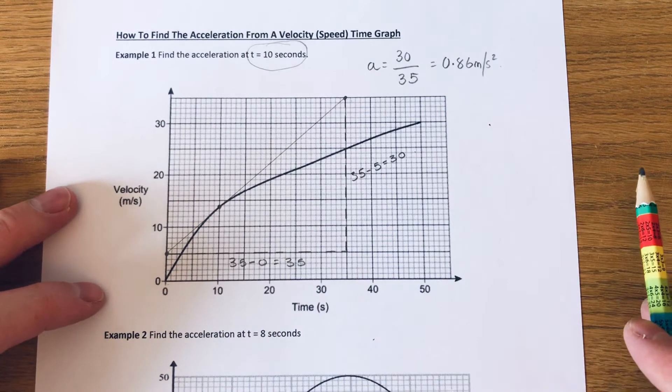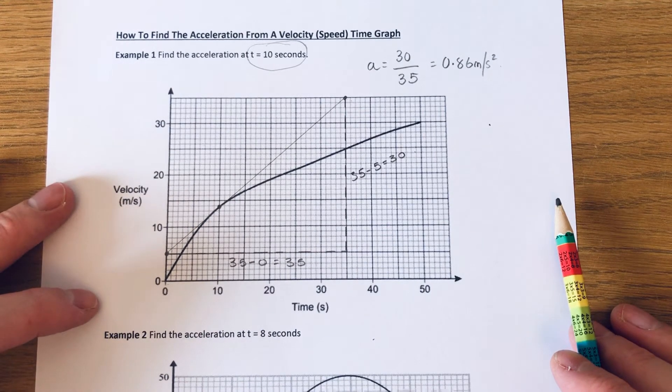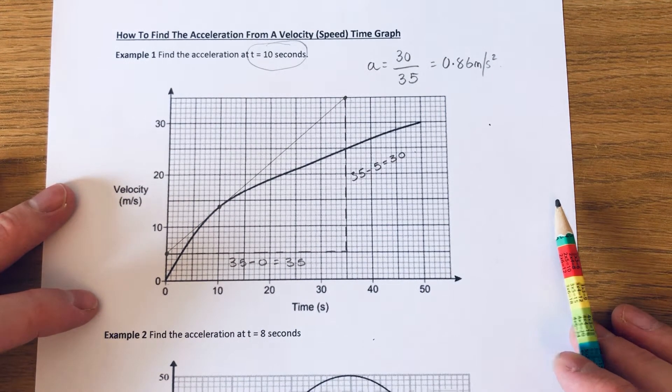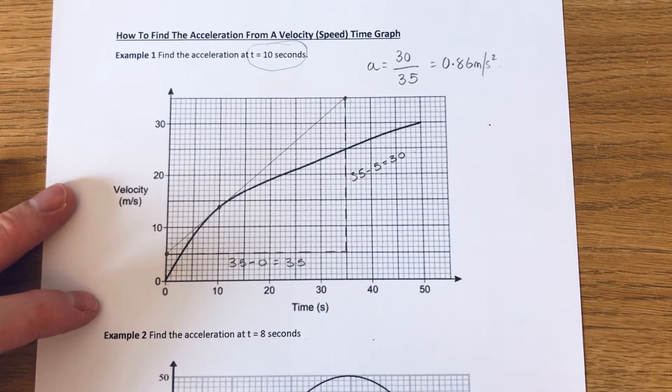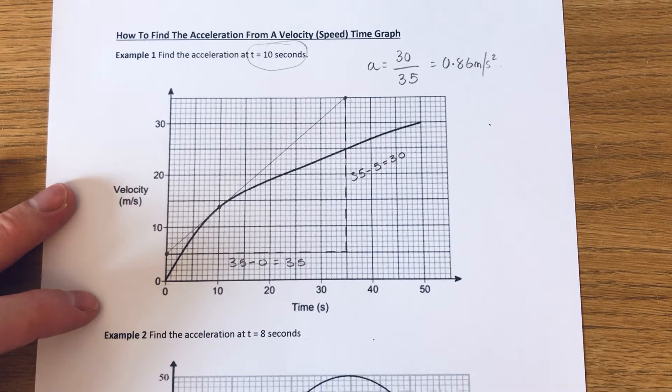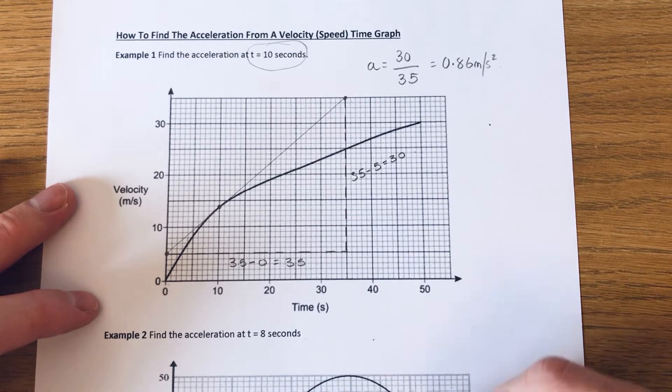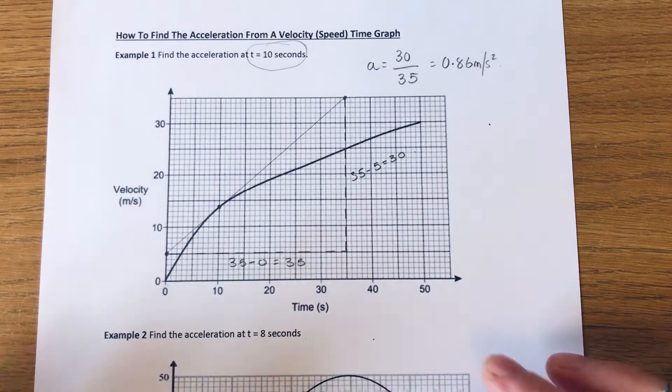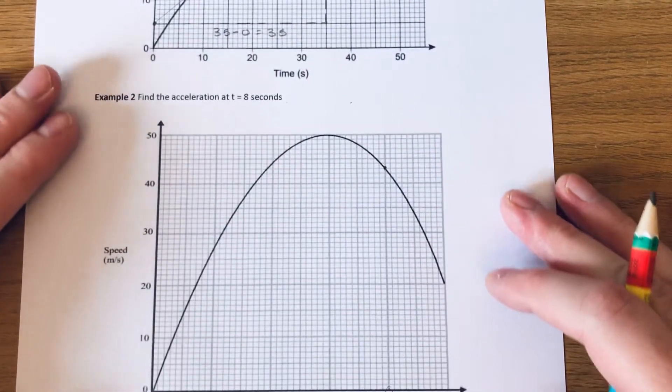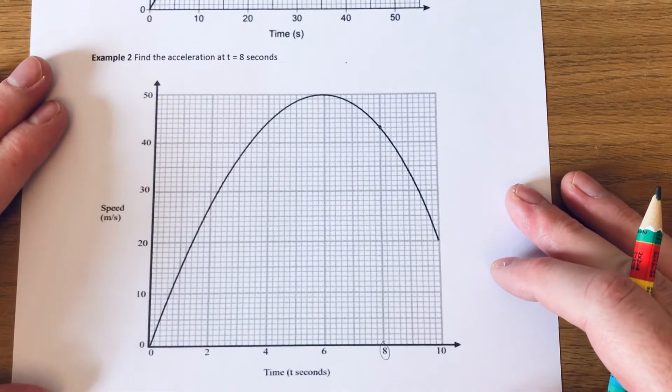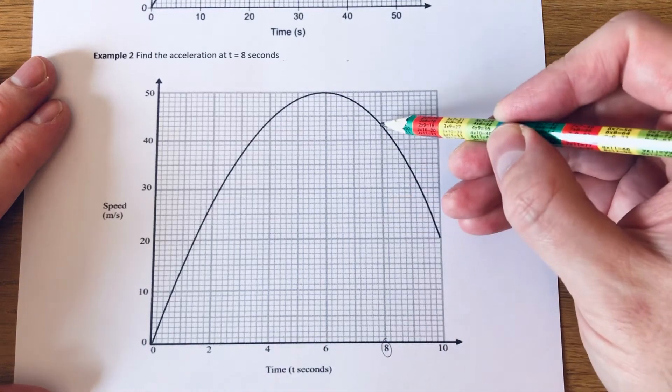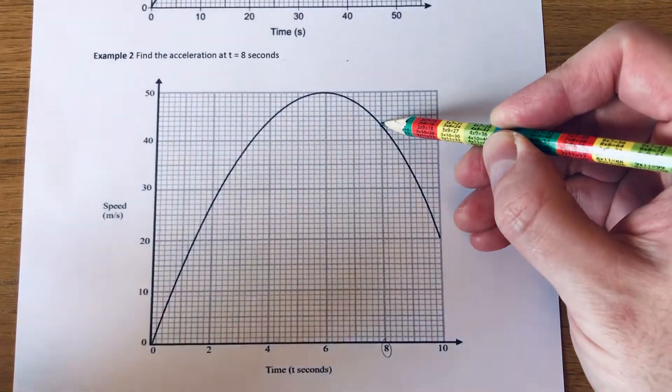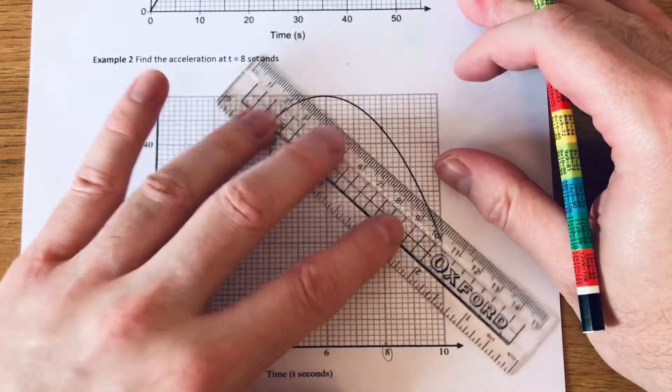So let's have a look at the second example. Okay, so we've got to find the acceleration at t equals 8 seconds. So again we need to just find out the point on the graph where t equals 8. So our point on the graph is here. So if we do, oh sorry, you can't see that can you? So let's just move that up a bit. So there's t equals 8. So our point on our graph is here. So if we do our tangent at this point here.